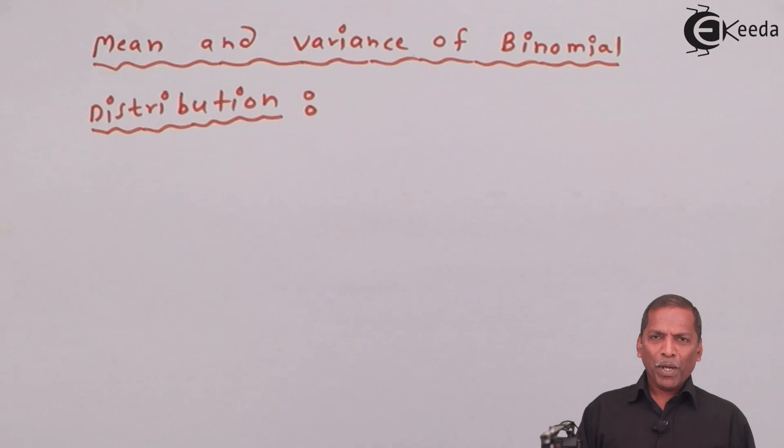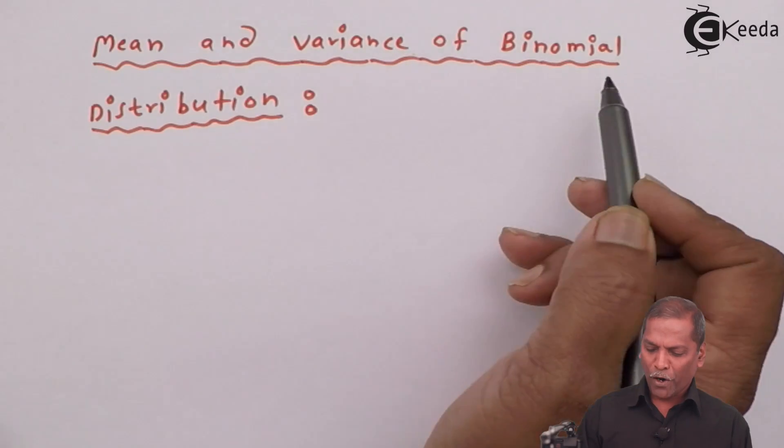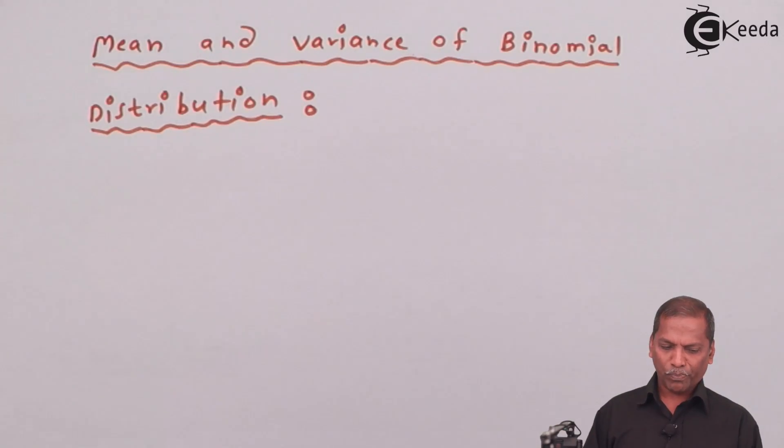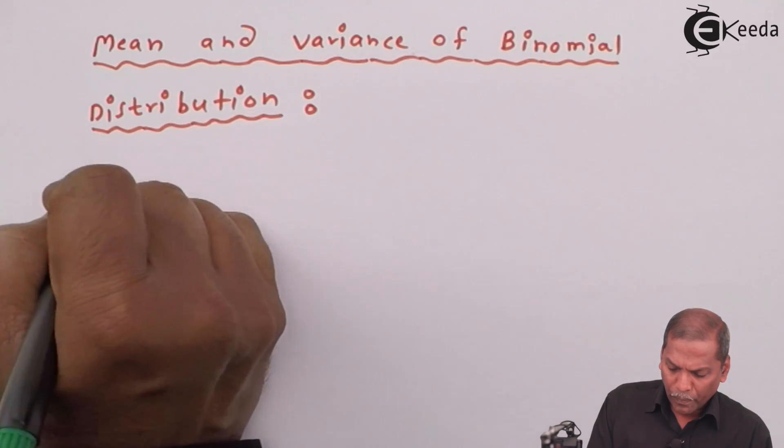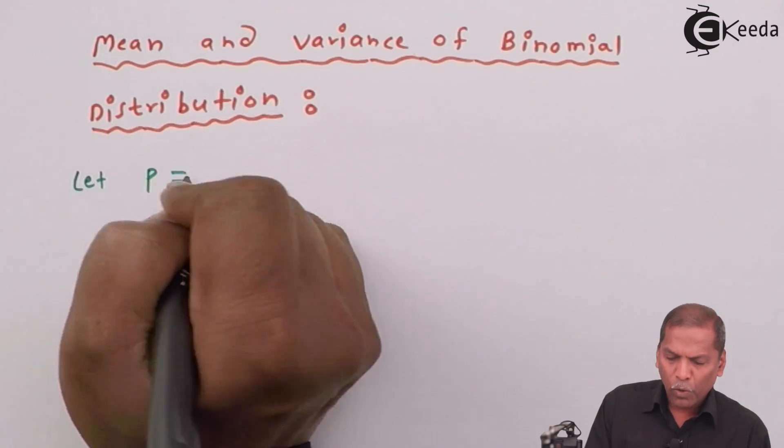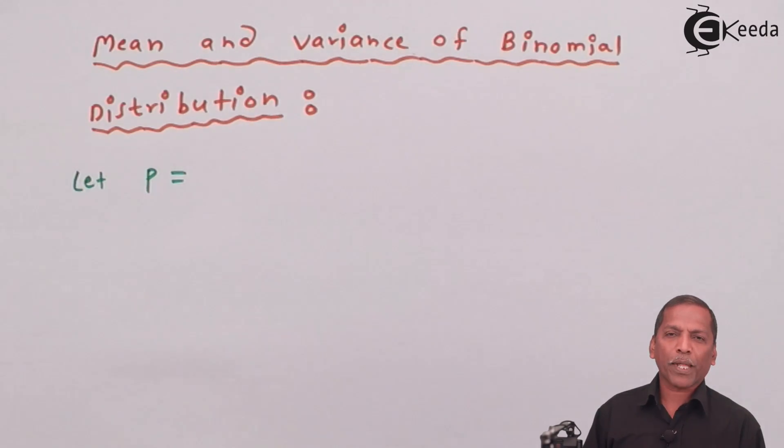Now we see the definition of mean and variance of binomial distribution. First of all, let P equal the probability of success.